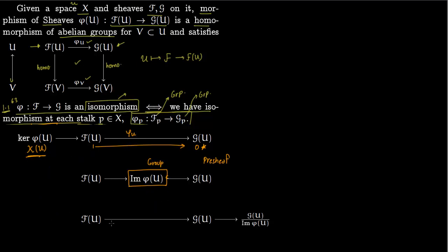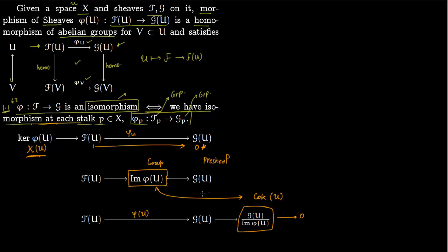You can't say the same for the image. Similarly you have the cokernel pre-sheaf: you have F(U) and G(U) and then you mod out by the image of φ(U) to get a cokernel pre-sheaf. So we have to sheafify the image and cokernel. Sheafification means thinking in terms of stalks and taking their disjoint union.